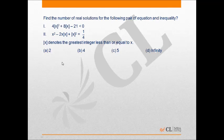This would be a level 2 question. The question states: find the number of real solutions for the following pair of equation and inequality. 4 times box bracket x square plus 8 times box bracket x minus 21 is less than 0, and x square minus 2x into box bracket x plus box bracket x square is equal to 1/4. Box bracket x denotes the greatest integer function less than or equal to x.